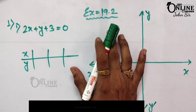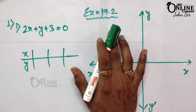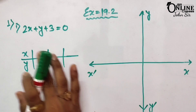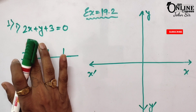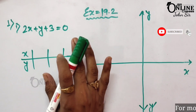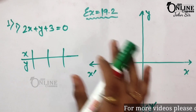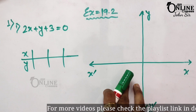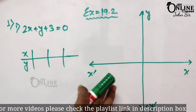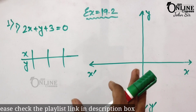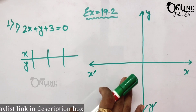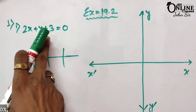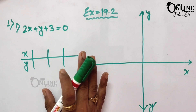For the previous chapter, please check the description box — the link will be there. The first problem is: draw the graphs of the following linear equations. These graphs will not be accurate like graph paper; I'm just going to show you how to draw them. The first equation is 2x + y + 3 = 0.